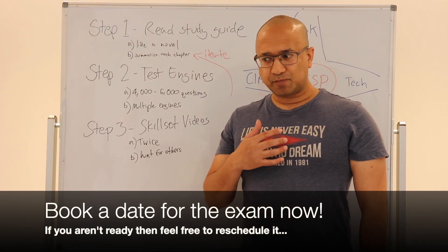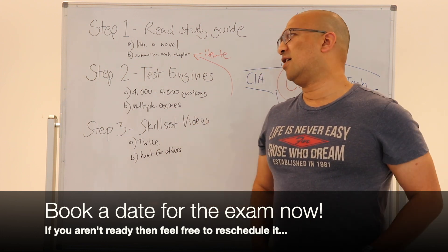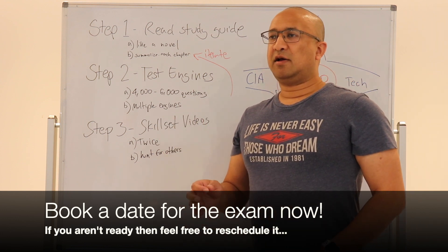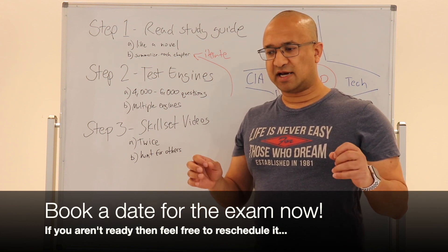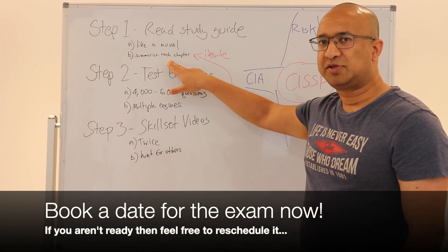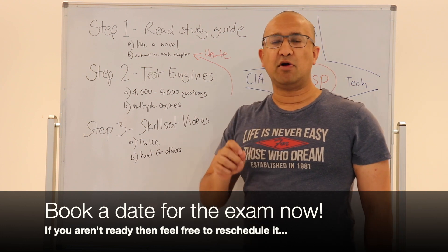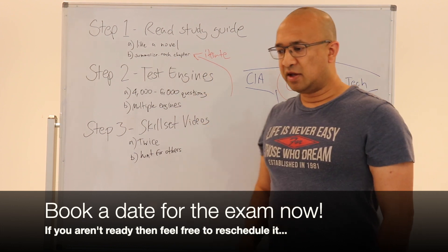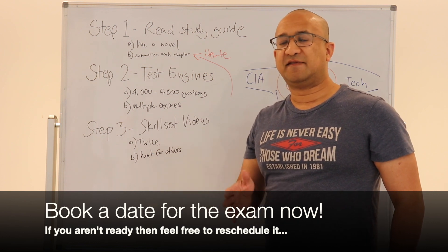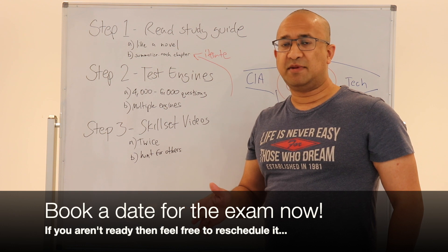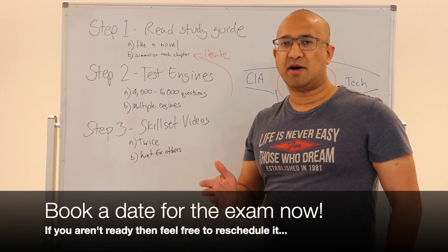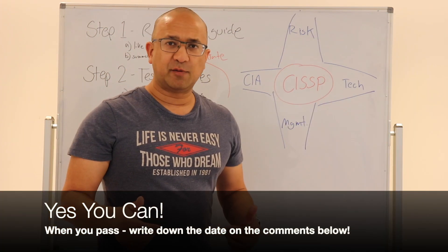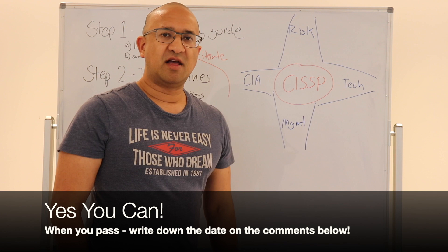In my own CISSP journey, I originally tried to do it in three months and had booked for mid-November. But I wasn't confident enough, so I pushed it out until I had manually summarized all 21 chapters in my exercise book and iterated on the test engine mistakes. I finished all that by the start of December and booked for mid-December — about a month's delay. You should be able to pass within three to four months if you follow this approach. Thanks for watching — I hope you pass! If you found this useful, please thumbs up. You can do it!